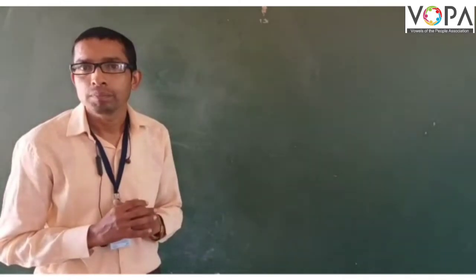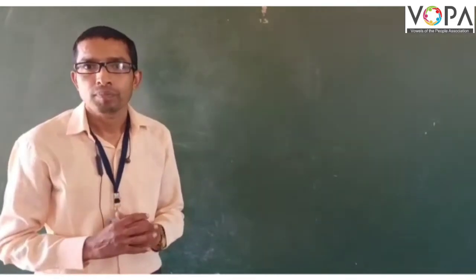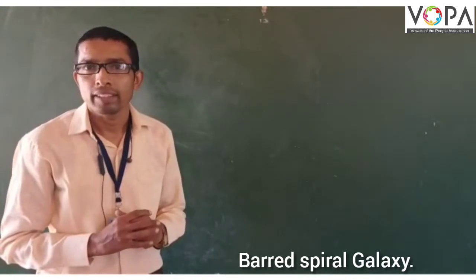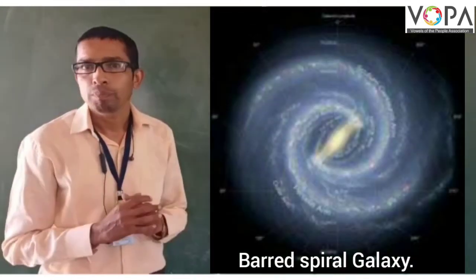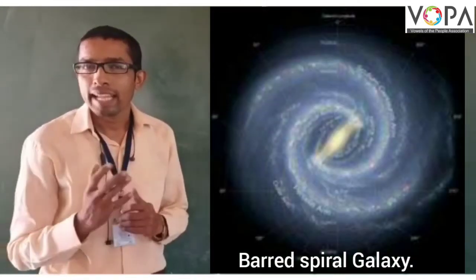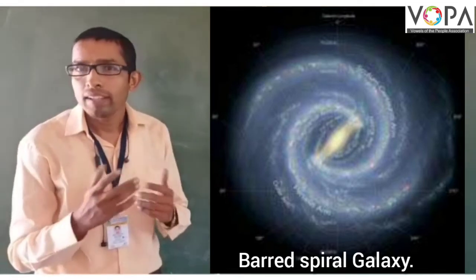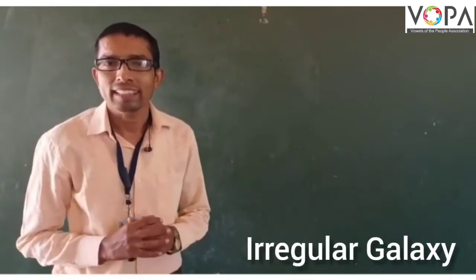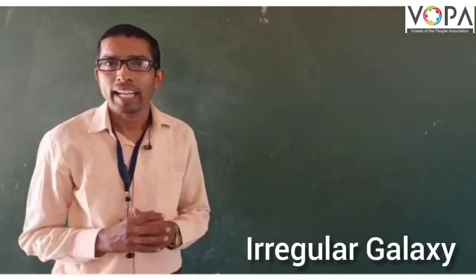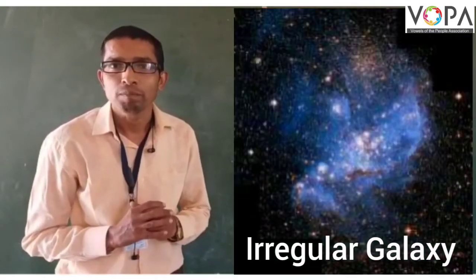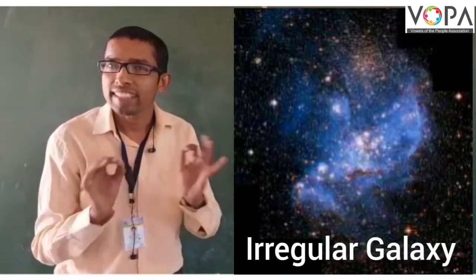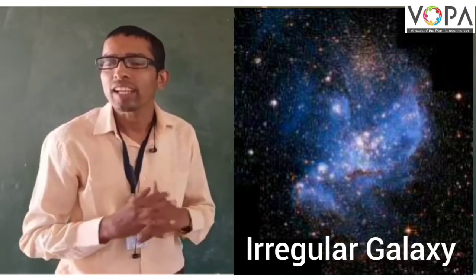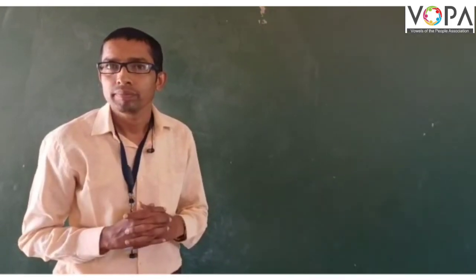It is 2.5 million light years from our galaxy. Our next galaxy is the barrel spiral galaxy. The barrel spiral galaxy has a bright space around the center. Irregular galaxies have no fixed size. This galaxy is bluish in color.